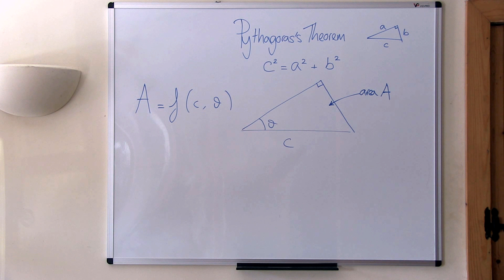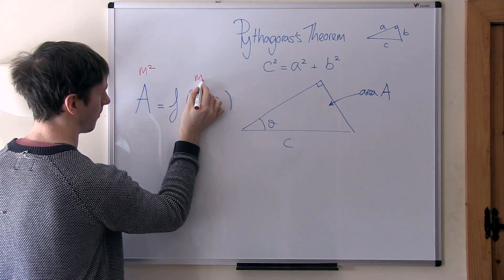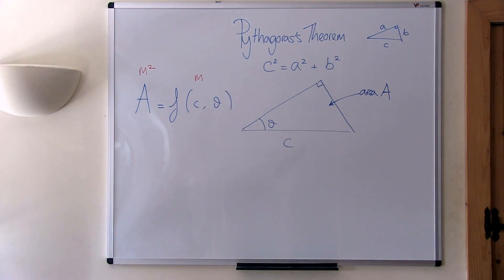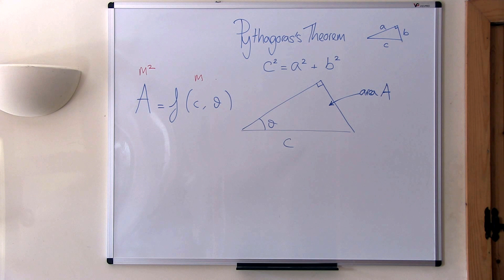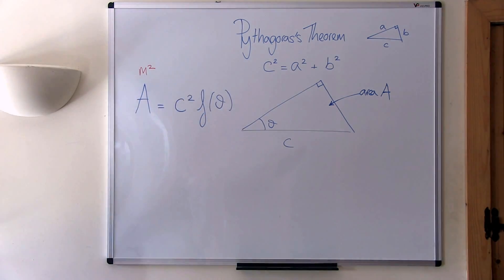The area of the triangle has units of metres squared. The hypotenuse is measured in metres, and the angle has no units. We want the right-hand side of the equation to be in metres squared, just like the left-hand side. But the only way that's going to happen is if we square c, the length of the hypotenuse. So our function has to look like c squared times f of theta.